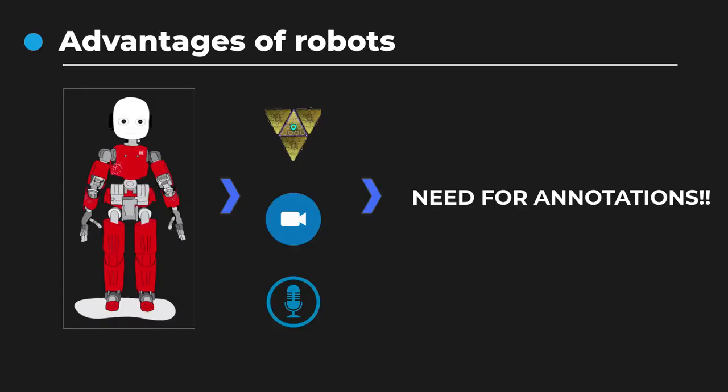While robots can theoretically have access to infinite data, they lack a way to learn from it in an autonomous way. More specifically, when considering a supervised learning approach, they need a way to label those data. The challenge is then to propose new techniques to format and process the data coming from the robot's sensors to use them in a supervised learning approach — that is, a way to autonomously annotate the data from the robot's sensors.